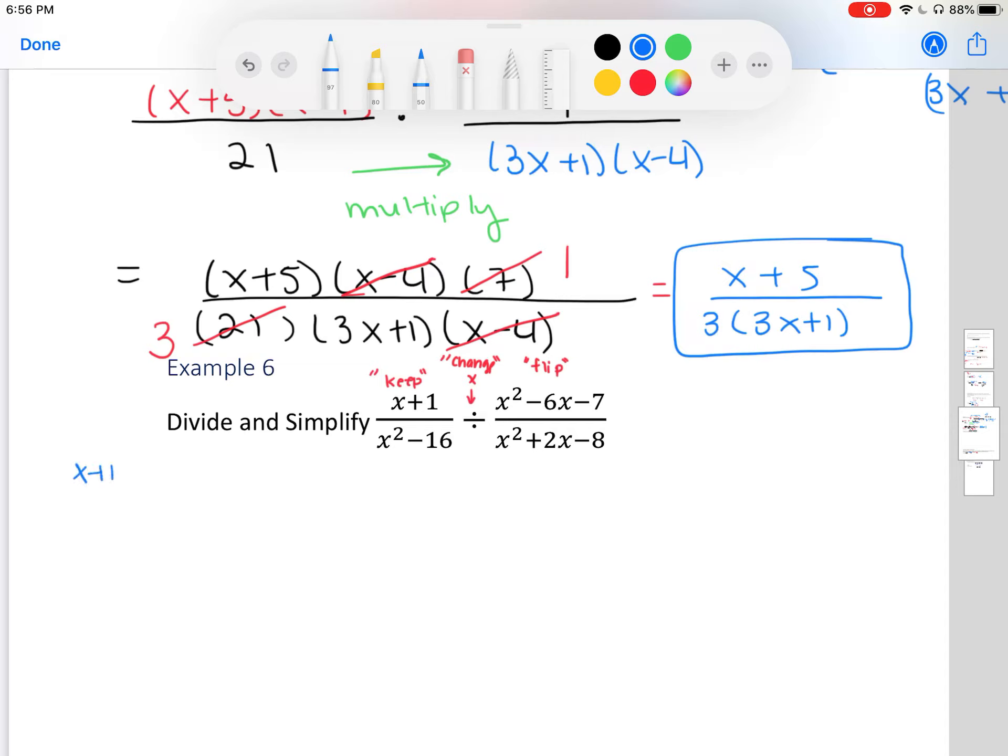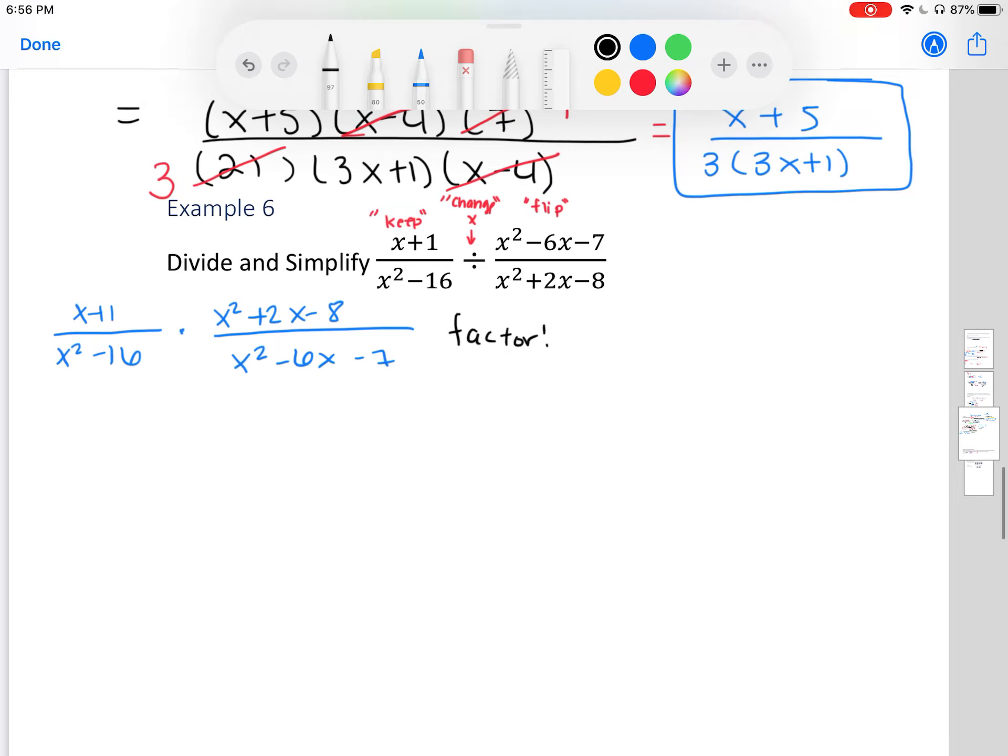Okay, so let's rewrite it. We have x plus 1 divided by x squared minus 16 times x squared minus 6x minus 7. On the numerator, I now have x squared plus 2x minus 8 divided by... no, times x plus 4 divided by x squared plus 2x minus 8. Now to finish off, let's go ahead and factor completely.